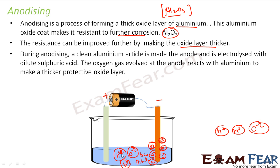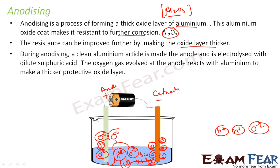Since the anode is positive, oxygen ions — being negatively charged — will flow towards it, and hydrogen ions will flow towards the cathode. Near the anode, we therefore have a high concentration of oxygen ions.